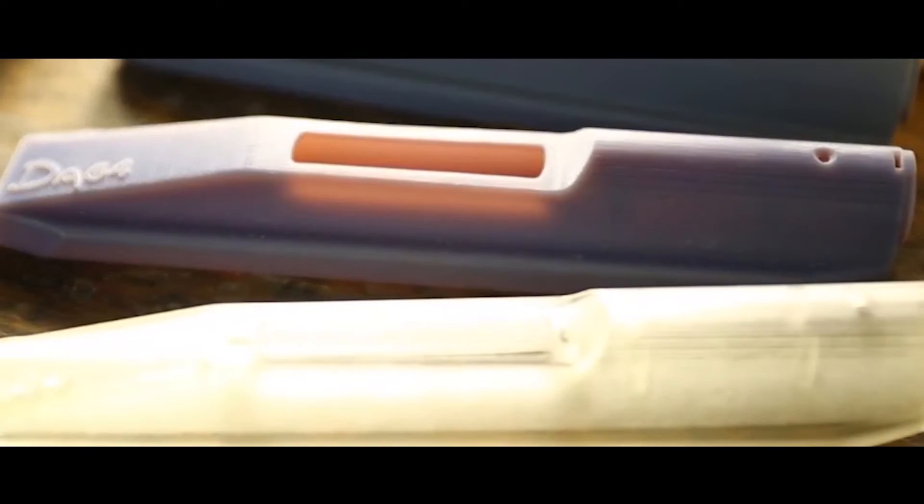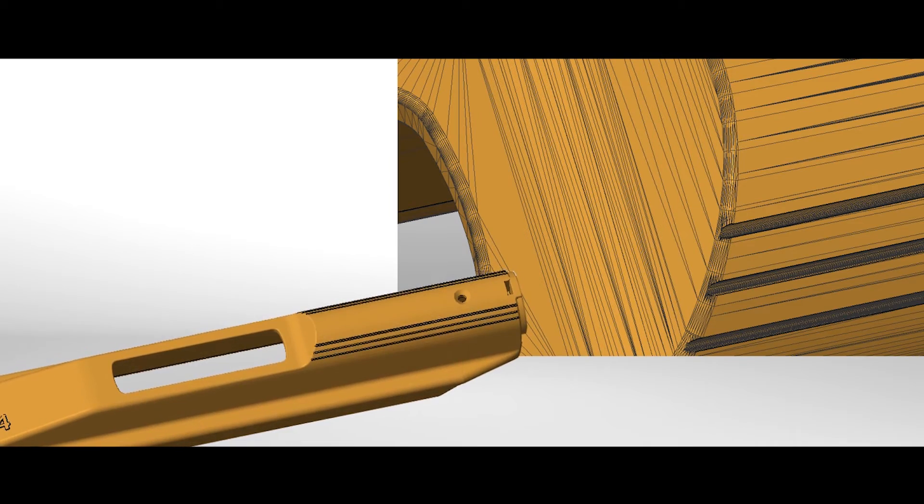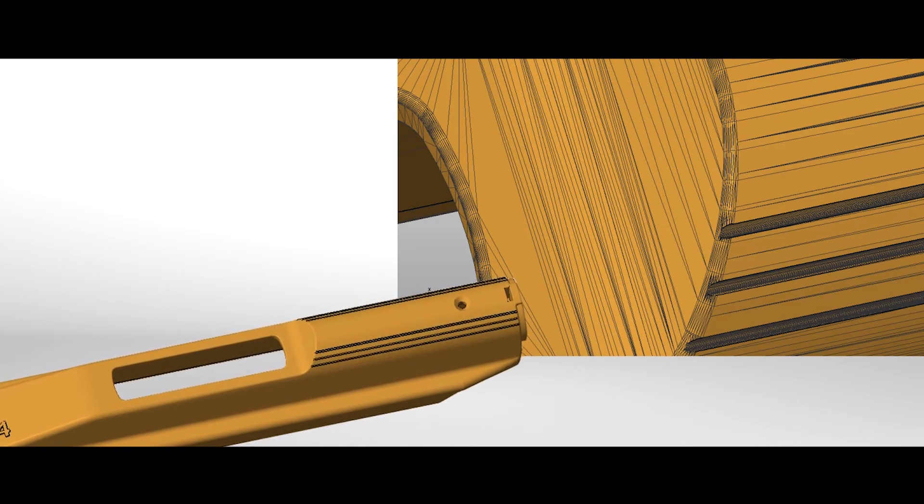But before making a pattern, companies also use PolyJet for prototypes during the design process. After making design revisions, the silicone molding process begins.